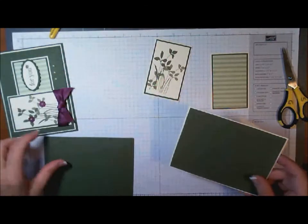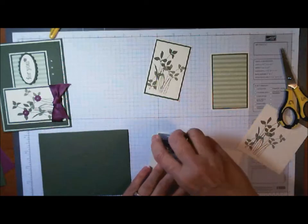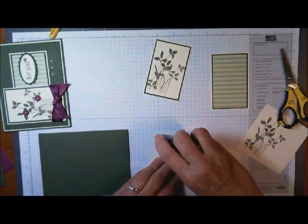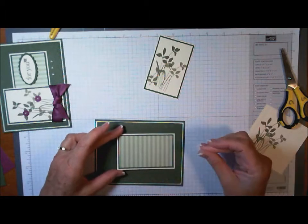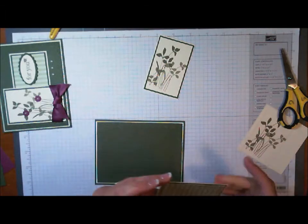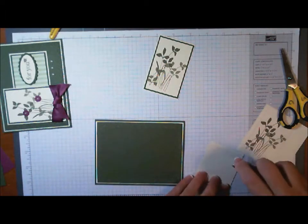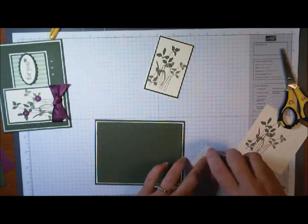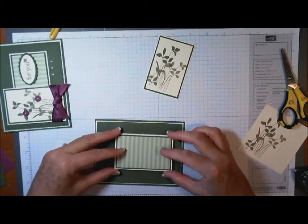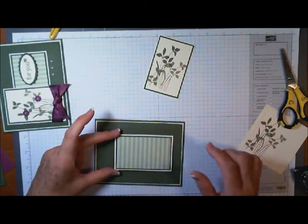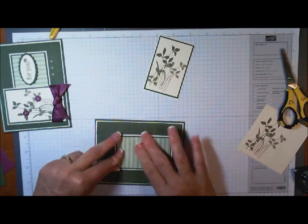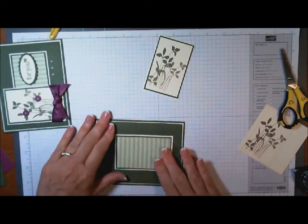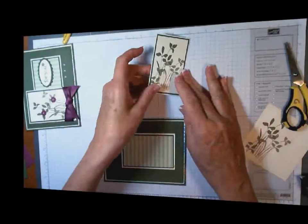This is our card base, folded landscape, and we're just going to use snail adhesive. Now we're ready to mount our piece of designer series paper that's been matted, and once again, that's just going to be done with snail. Just kind of put that just inside. This end is going to be covered up so it doesn't matter, so just kind of center that on your right side of your card or your left side if you want to have it the other direction.